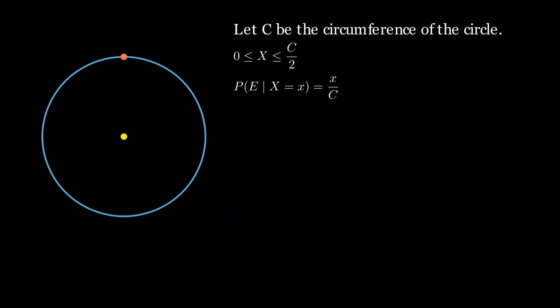First, let's find its cumulative distribution function. What is the probability that the distance between the first two points is less than or equal to X? For this, the second point can be positioned within a distance X on either side of the first point.